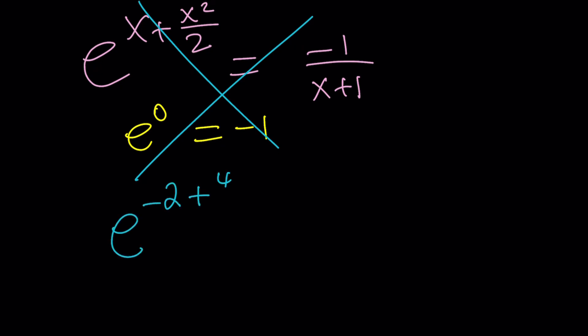It's going to give you e to the power negative 2. Again, I'm checking x equals negative 2. Negative 2 plus 4 divided by 2. That's equal to, is it equal to negative 1 over negative 2 plus 1?